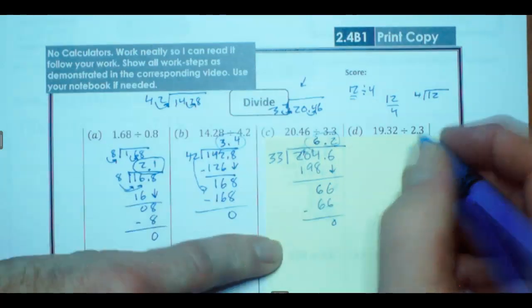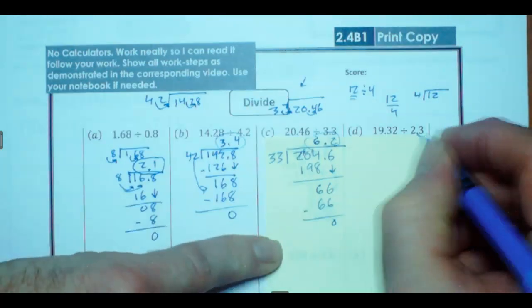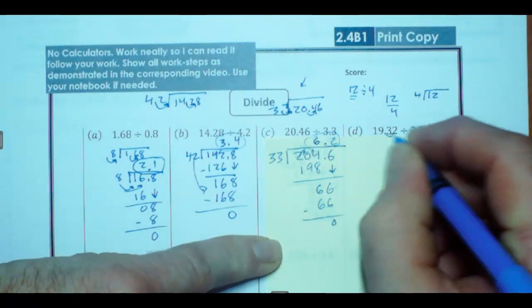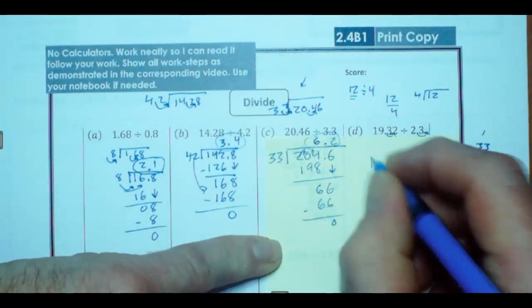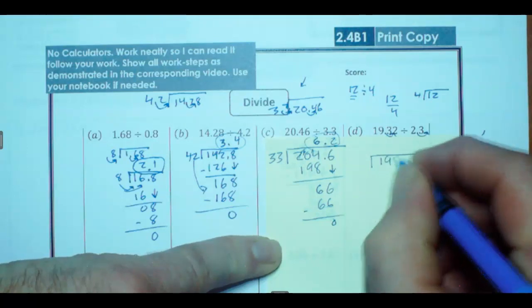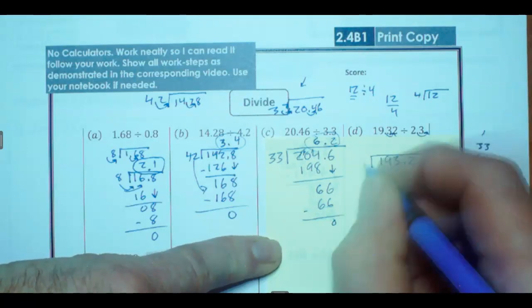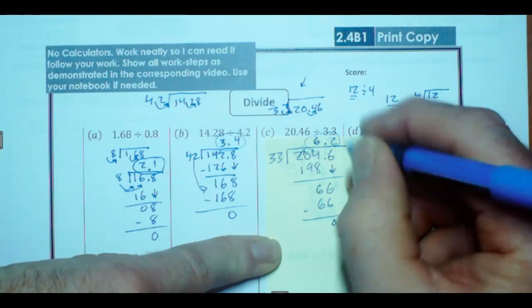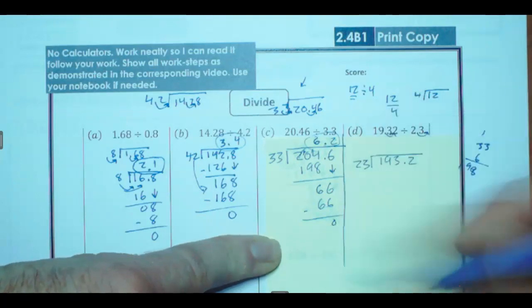So, 19.32. So, here's my divisor here. So, I'm going to have to move one spot here. Give myself a little more room this time. So, we have 193.2, and we're going to divide that by 23. Put my line in here.